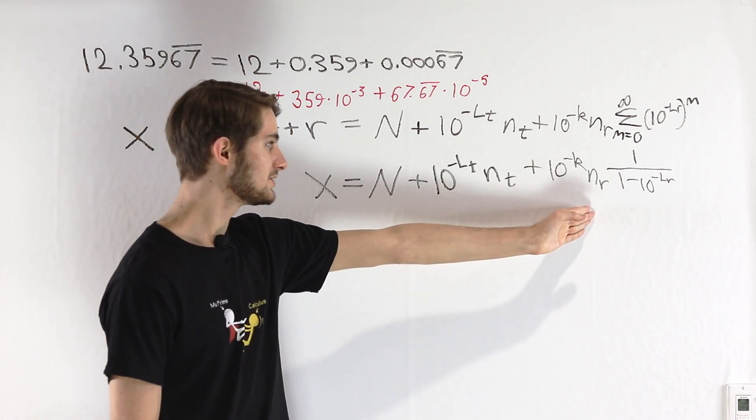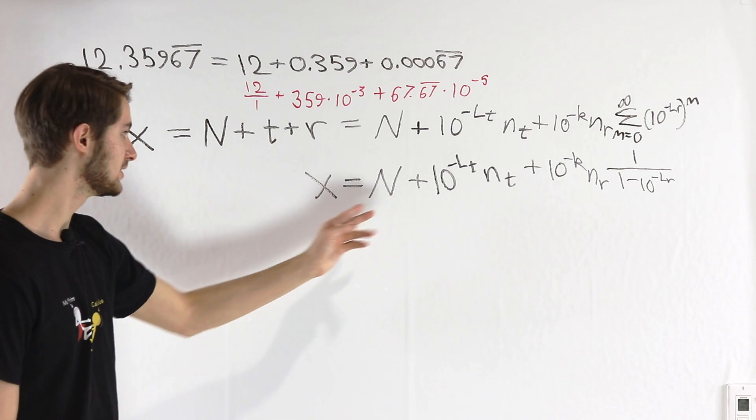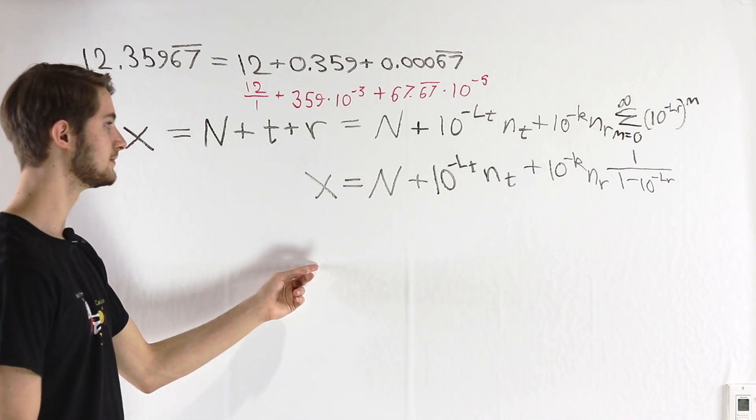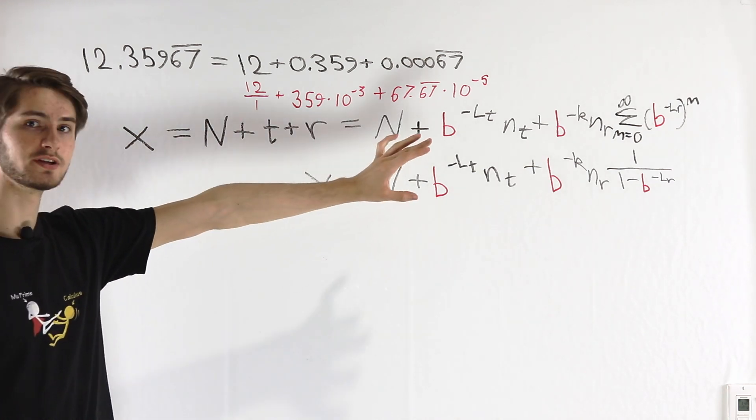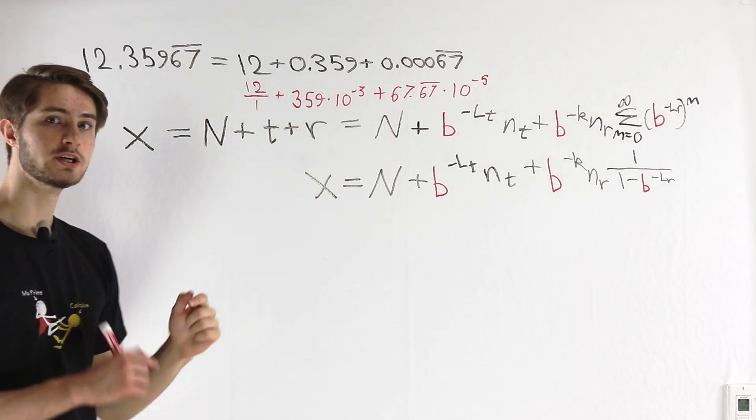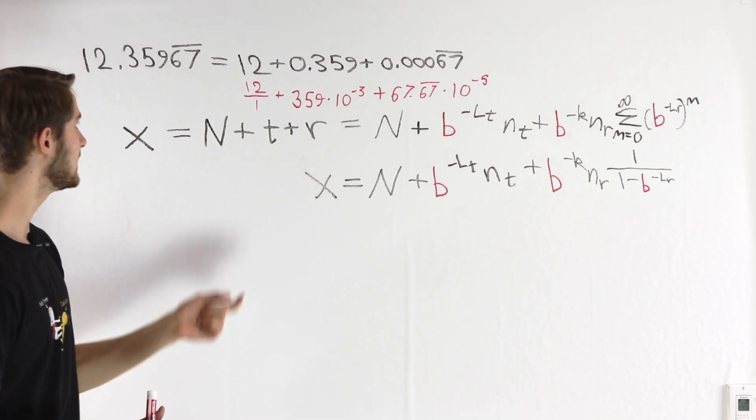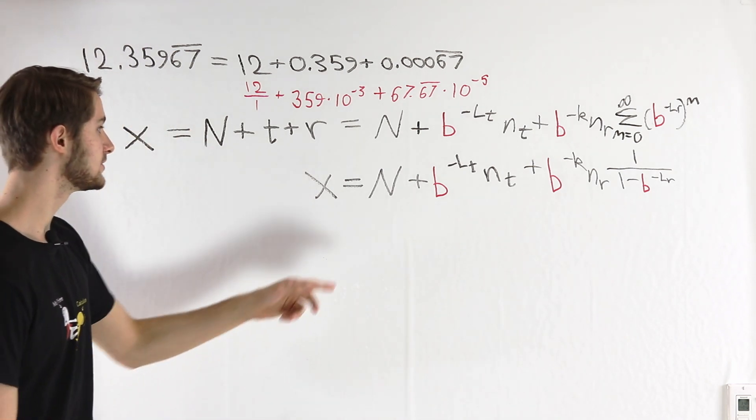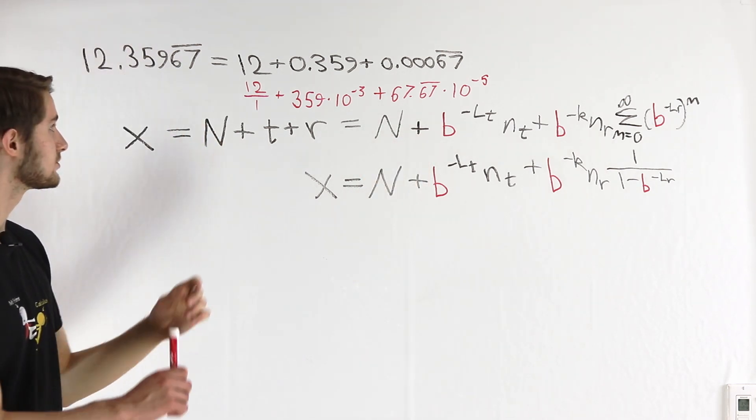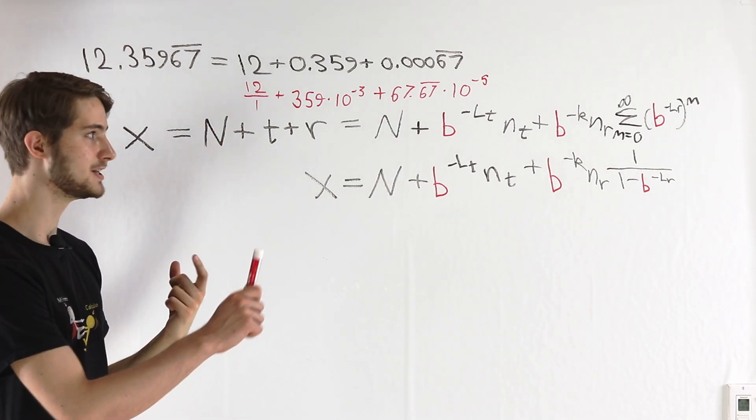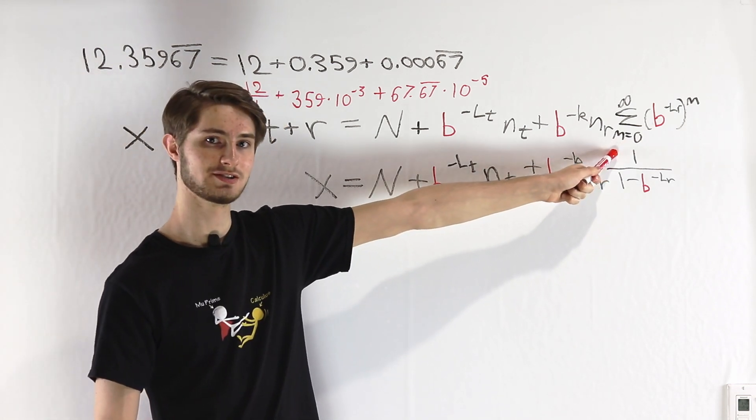Therefore, every single element in this expression here is rational, and X must be rational as a result. And the final thing to note here is that all of the steps that we just did with that proof generalize not just to a base 10 number, but to any number of an integer base b. And we do that by splitting up the repeating and non-repeating parts and evaluating this geometric series.